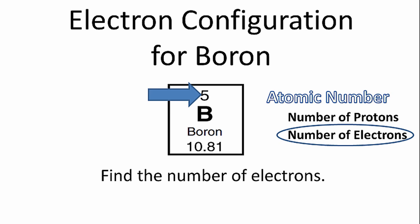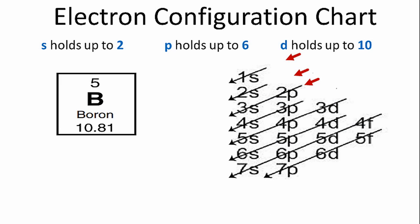And we can use that number to find the electron configuration for boron. So let's try it. We'll use the chart on the right to help us get the correct configuration. With boron, we have five electrons to work with.